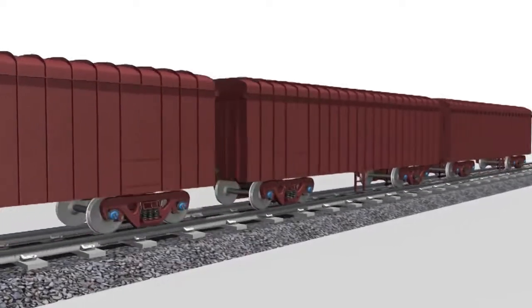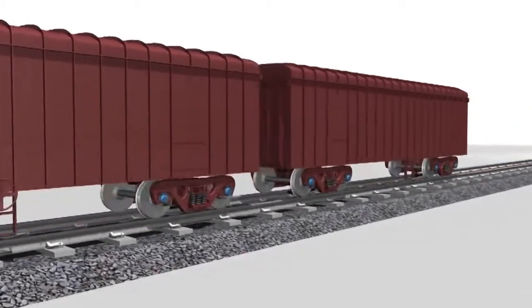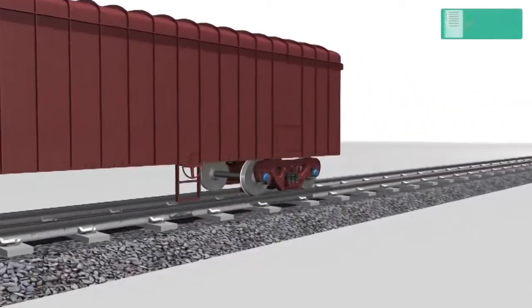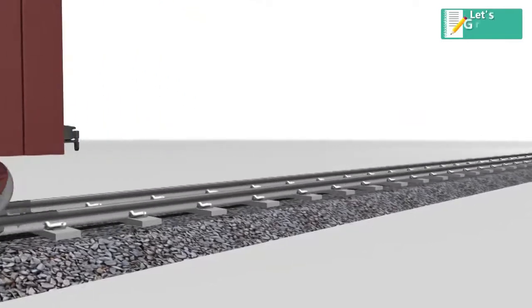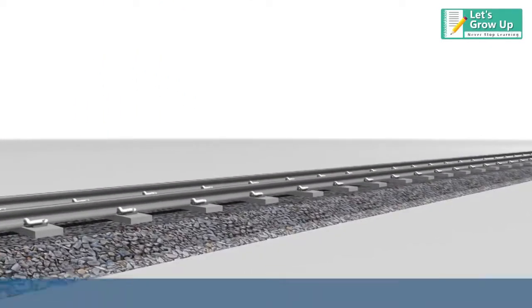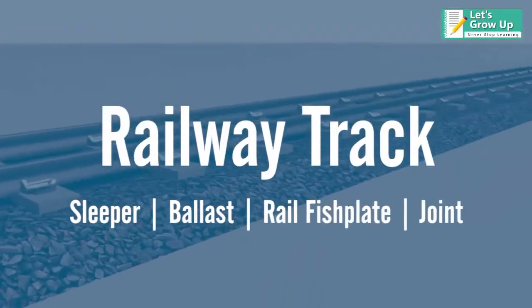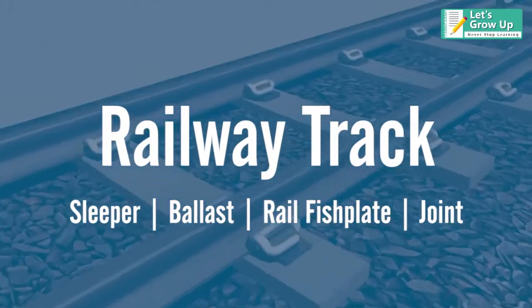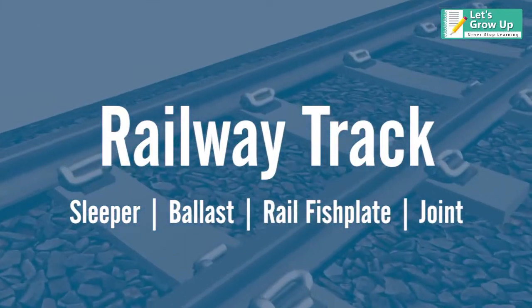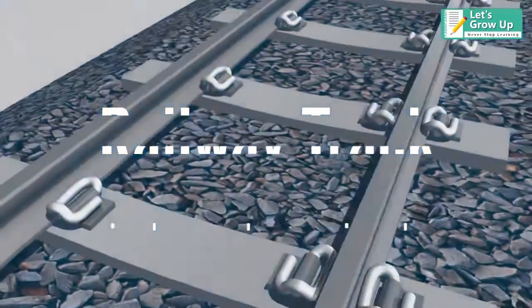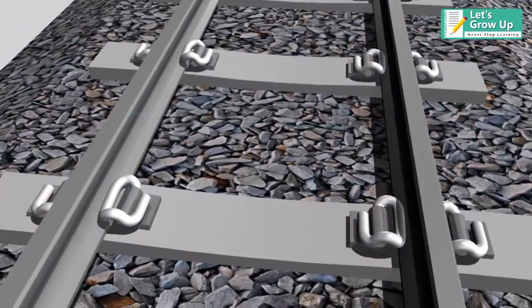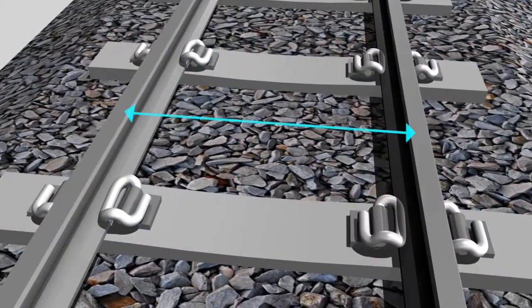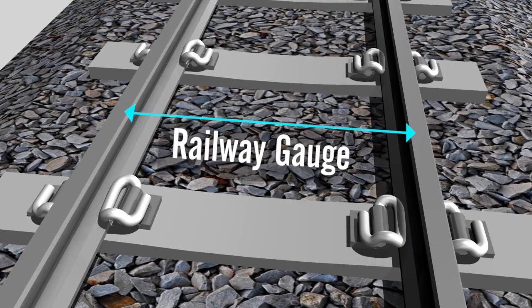The track on a railway, also known as the permanent way. In this video, we will dive into the terminology of rail, also known as railway track. The distance between the two tracks on any railway route is known as railway gauge.